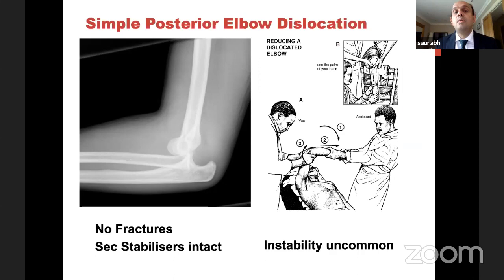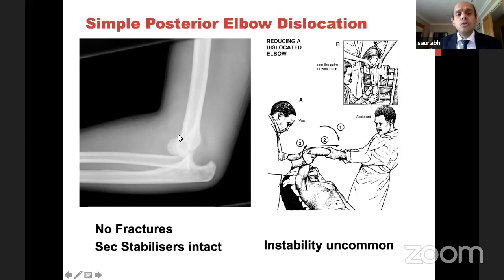Now let's go to elbow dislocation. The elbow can have a simple dislocation with no fracture, or a complex dislocation associated with a fracture. Simple dislocation is a common case in A&E — shoulder and elbow are the two common upper limb joints that dislocate. More often than not it's a posterior dislocation. This is the reduction maneuver we all know: a bit of thumb pressure onto the olecranon and the elbow should reduce easily.